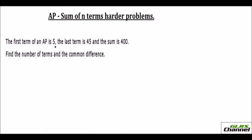The first term of an AP is 5, so write A = 5. The last term is given as 45, so AN = 45. The sum is SN = 400 — we don't know how many terms there are, so we take it as SN. Now we need to find the number of terms and the common difference, so we need to find both n and d.